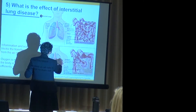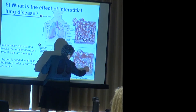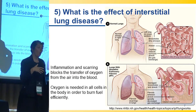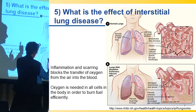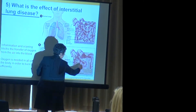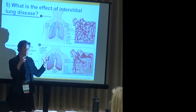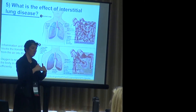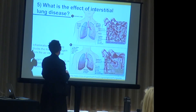What happens when you develop a fibrotic or inflammatory disease is that the area around these airspaces becomes filled with either inflammatory cells or scar — fibrosis. Because of that, it actually separates the airspace from the blood vessels or completely eliminates that space, and the capacity of the lung to absorb oxygen is substantially diminished.